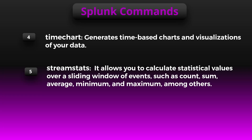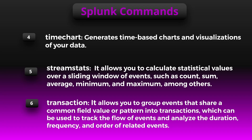The next command is streamstats. Sometimes you want to calculate metrics that change over time as new data arrives — that's where streamstats comes in. It allows you to calculate rolling statistics as the data is being processed, so you can get up-to-date information on metrics like moving average, cumulative sum, or percentiles. This is useful for monitoring real-time data streams or identifying current trends.